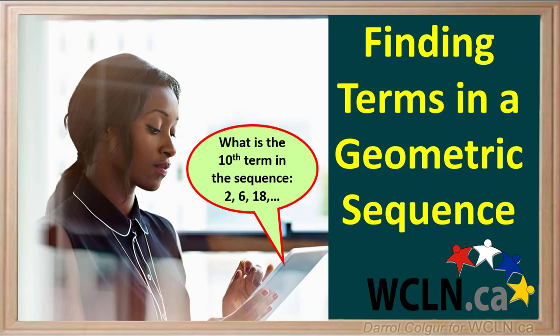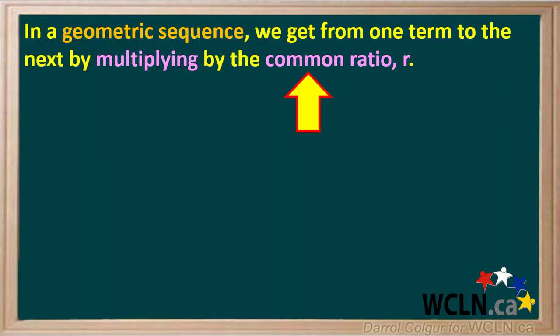Often, we need to find a particular term in a geometric sequence. Remember, in a geometric sequence, we get from one term to the next by multiplying by the common ratio r.